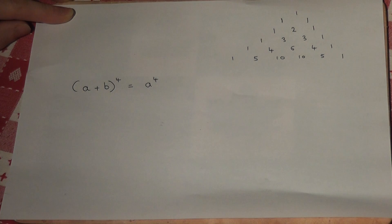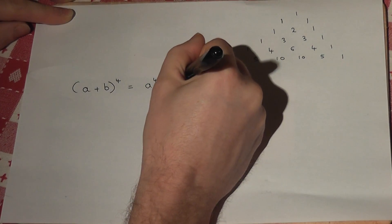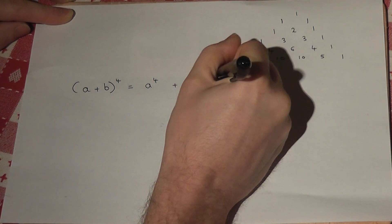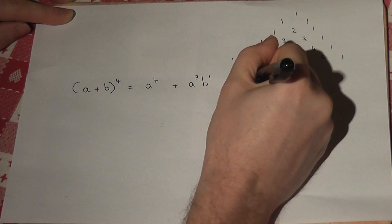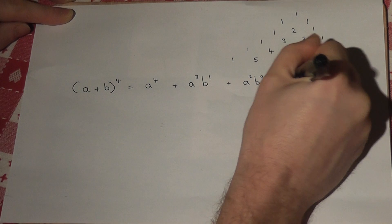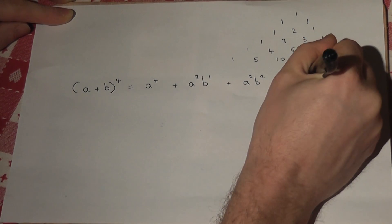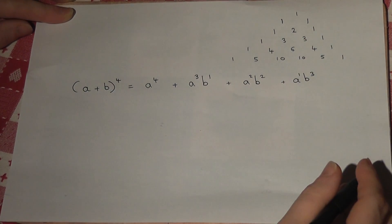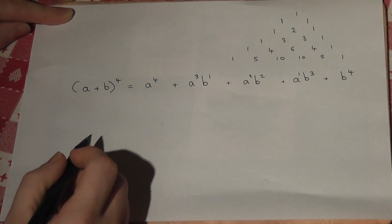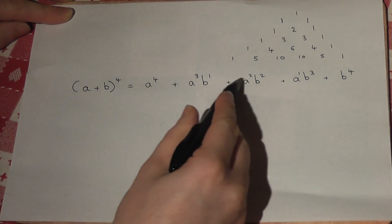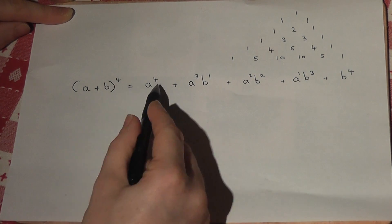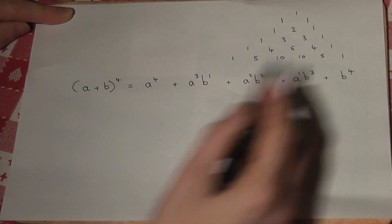Then put a^3*b^1, then a^2*b^2, then a^1*b^3, and finish off with b^4 since there's no a's left. So the a's decrease each term in terms of powers and the b's increase by 1 each time.